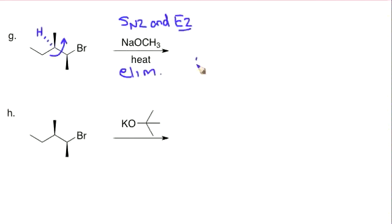If we do that, now we have the H and the Br anti-periplanar. We have this methyl group still intact. And in doing that rotation, now we've put the ethyl group pointing up and the methyl group pointing back.